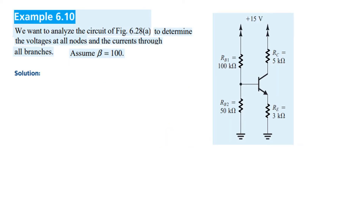Straight away, we want to analyze the circuit to determine voltages at all nodes and currents through all branches: VB, VC, VE, and currents IB, IC, IE. Beta is given to be 100.